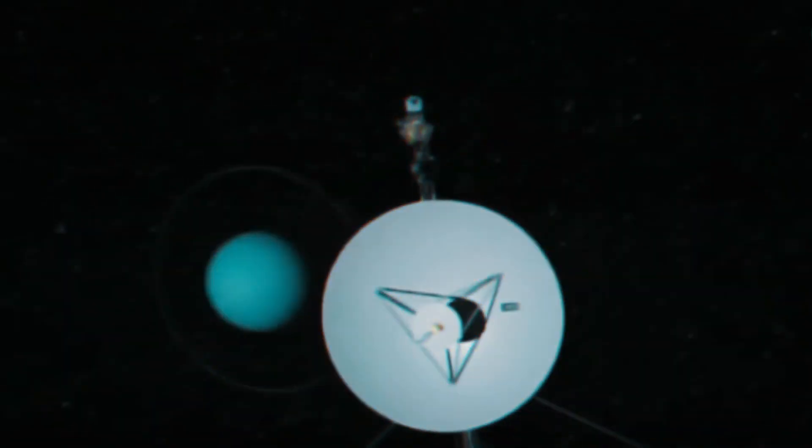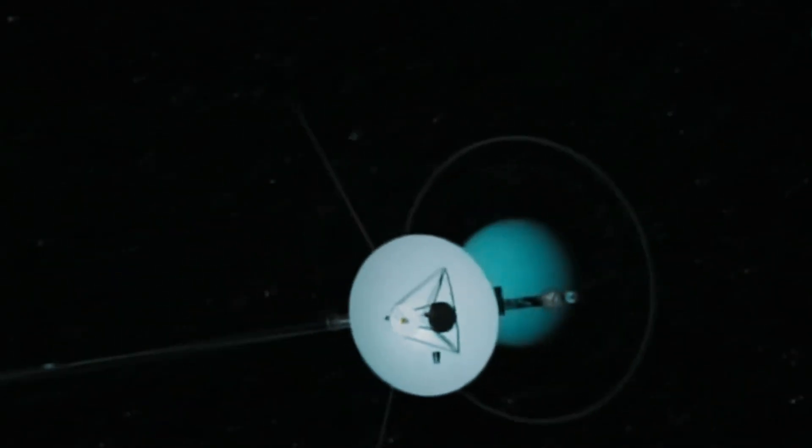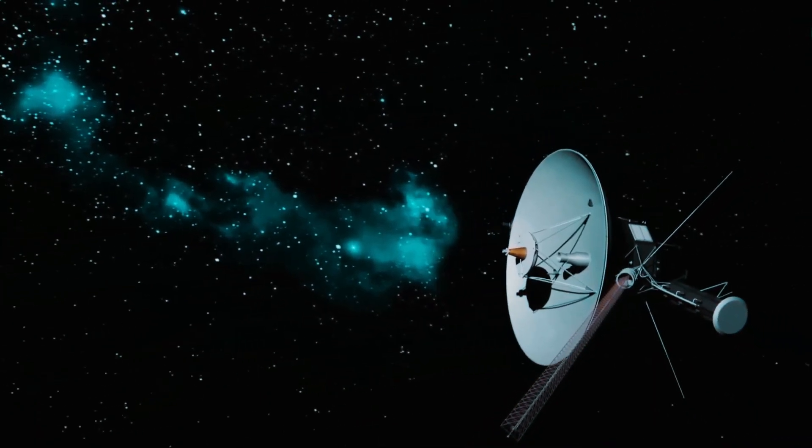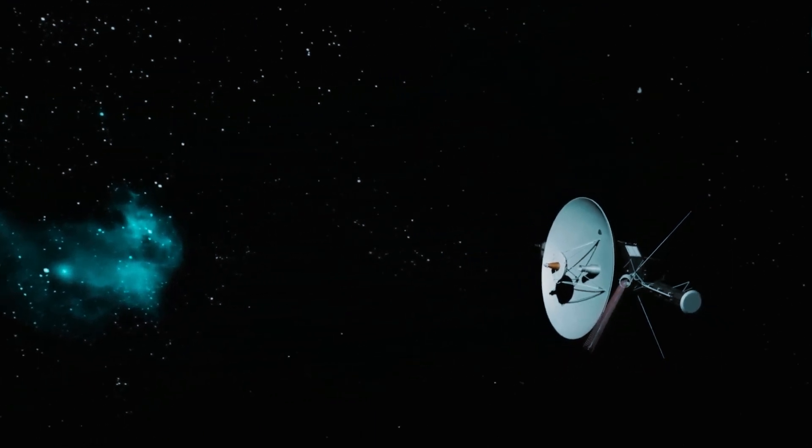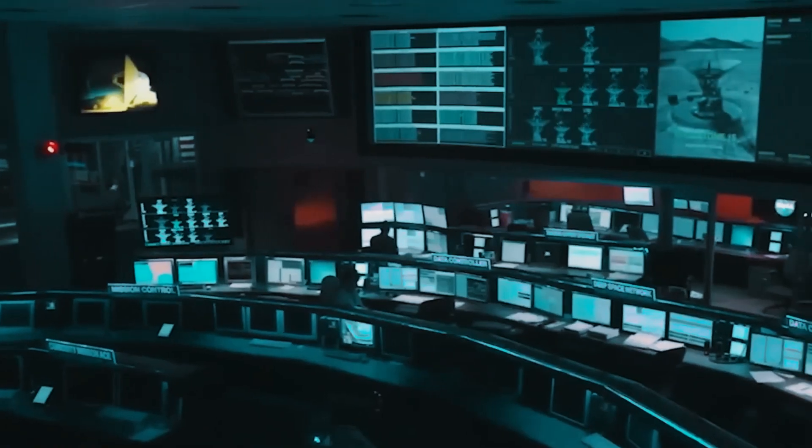Scientists always keep the antenna of such spacecraft pointed towards Earth to establish contact. Even a slight change in the antenna's direction can disrupt communication. Command sent by JPL scientists caused a two-degree shift, misaligning the antenna from Earth.